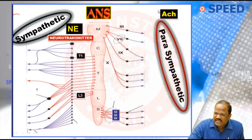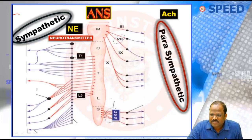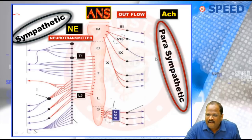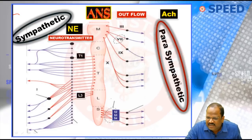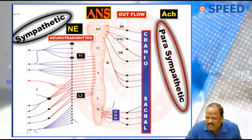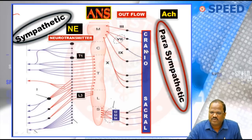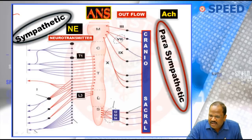Question one: since acetylcholine is the transmitter of this system, I am going to call this system the cholinergic nervous system. So, the parasympathetic system is also called the cholinergic nervous system. Question number two: what is the outflow of sympathetic and parasympathetic? The outflow of parasympathetic comes from the cranium and from the sacrum, so it is called craniosacral outflow.